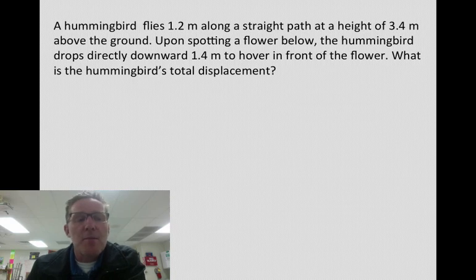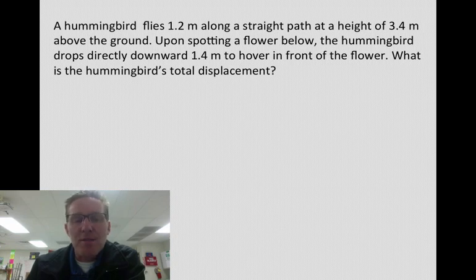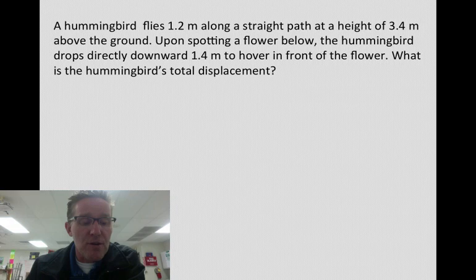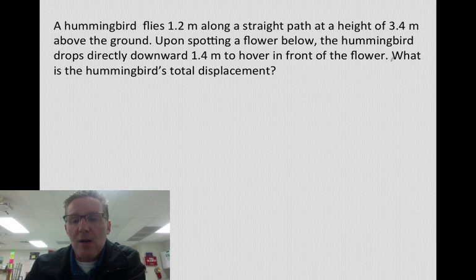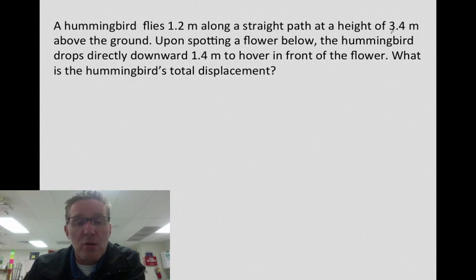Okay. So let's go ahead and do another one of these problems. In this situation, we have a hummingbird and it flies 1.2 meters along a straight path at a height of 3.4 meters above the ground. Upon spotting a flower below the hummingbird drops directly downward 1.4 meters to hover in front of the flower. What is the hummingbird's total displacement? Now I know the wording here doesn't ask for the resultant displacement, but that applies here because the total displacement would be all of the displacements. In this situation, we do have two different displacements. I think it's easy to make a mistake and lose track of what's being given. Sometimes these situations have numbers that don't matter. In this situation, the height, the fact that we're 3.4 meters above the ground does not really matter in this situation.